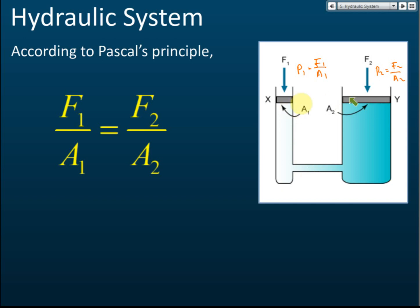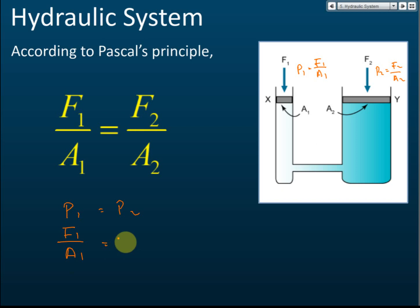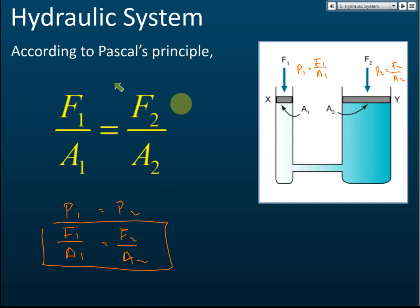According to Pascal's principle, if you apply 200 pascals here, the pressure there must also be 200 pascals, provided they are at the same level. Therefore P1 equals P2, and since P1 = F1/A1 and P2 = F2/A2, we get the hydraulic system formula: F1/A1 = F2/A2. In SPM exams, the two pistons are usually given at the same level.